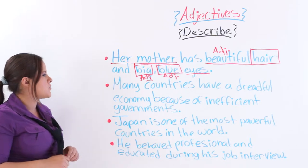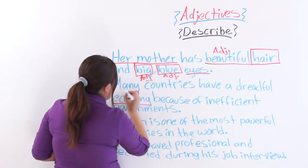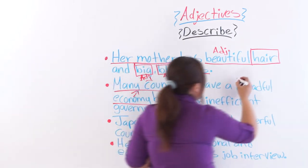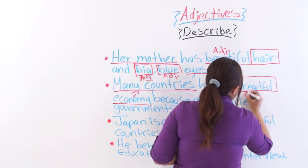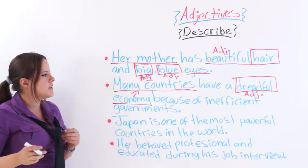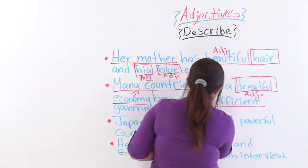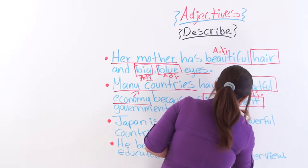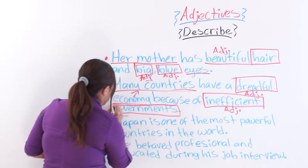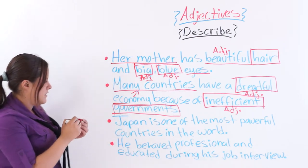Next: many countries have a dreadful economy because of inefficient governments. 'Dreadful' is the adjective describing the noun 'economy.' 'Inefficient' is the second adjective, describing the noun 'governments.' So: many countries have a dreadful economy because of inefficient governments.